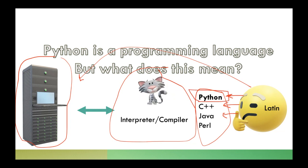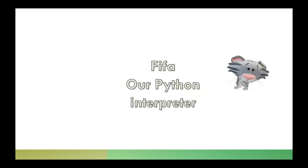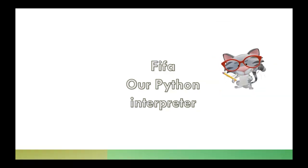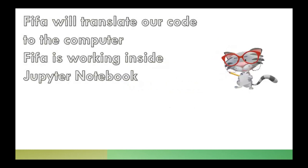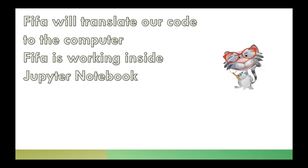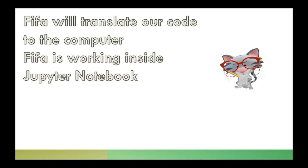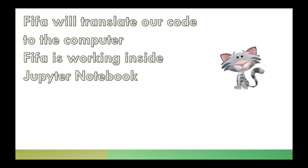We will choose Python to start with because it's one of the easiest languages and has very good capabilities. I will introduce a fictitious character called FIFA — my cat — as the name for the Python interpreter, to make it easier to communicate. FIFA will translate our code to the computer and tell it the instructions we want it to execute.